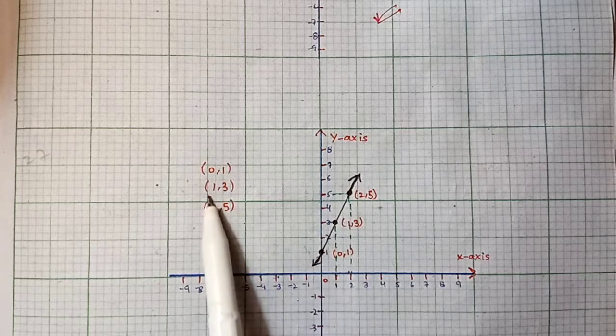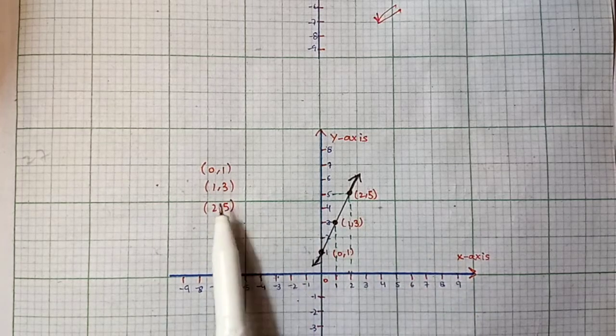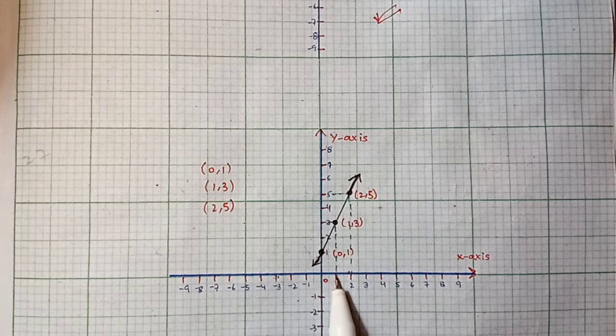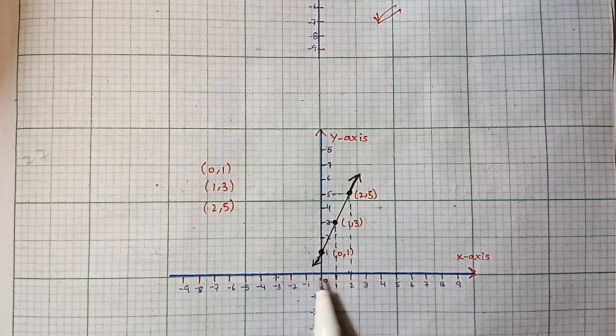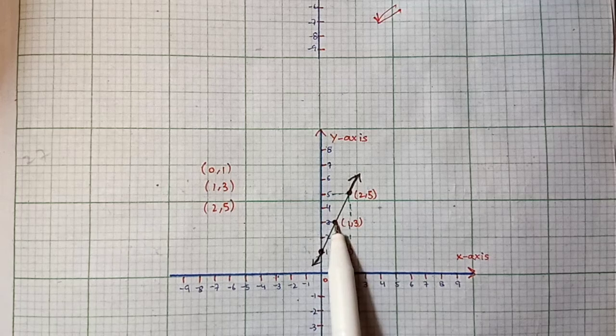Second, we have (1,3) where x = 1 and y = 3. So we find x = 1 and y = 3 on the graph and plot this point.